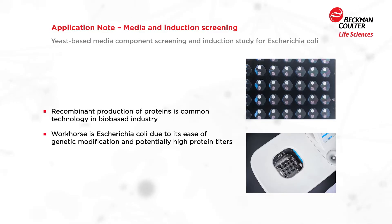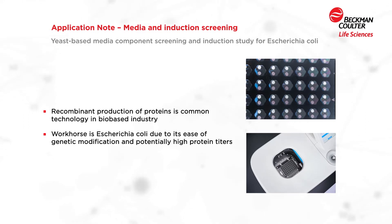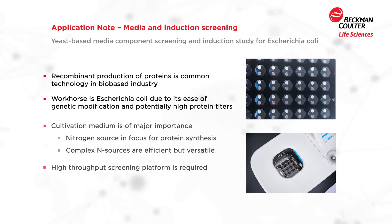Recombinant protein production is a common technology in bio-based industries, with its workhorse being E. coli due to its ease of genetic modifications and potentially high protein titers. To achieve high protein titers, the cultivation media is of major importance.